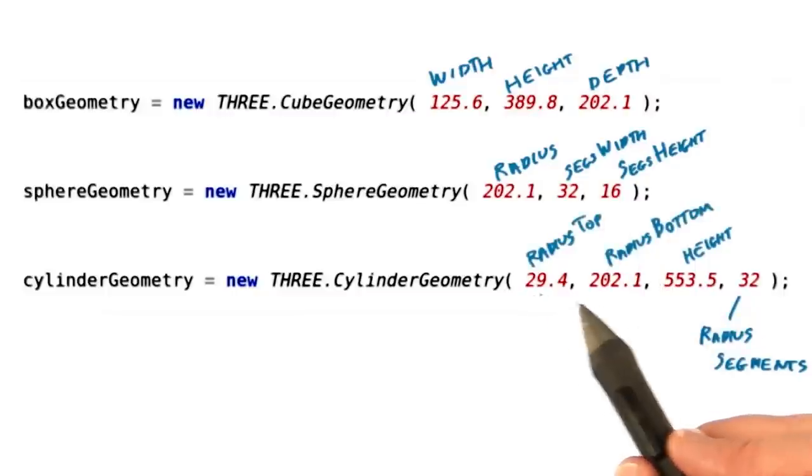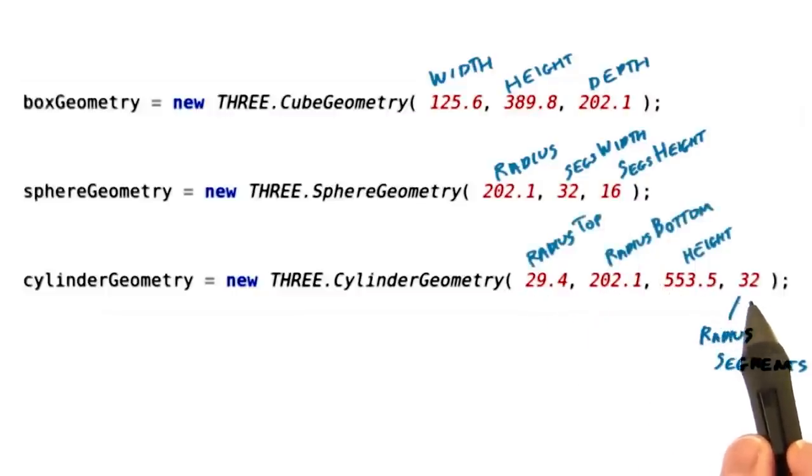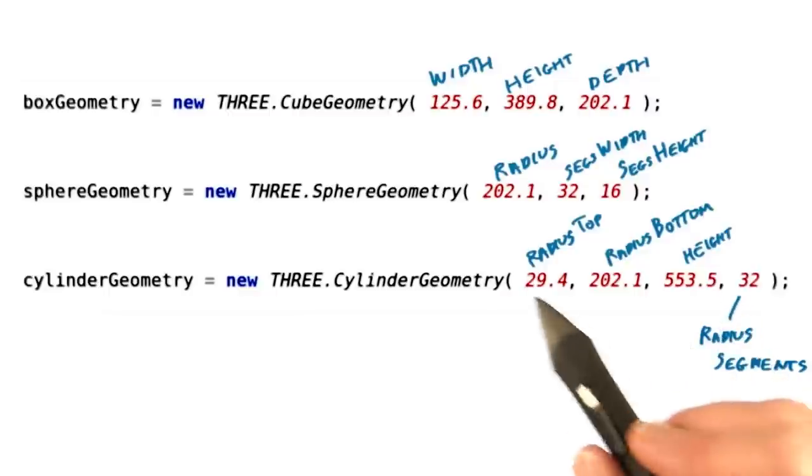The cylinder gives an upper and lower radius, followed by a height, and by the amount of tessellation along its equator. Again, please use the number 32. See the additional course materials for documentation for these various methods.